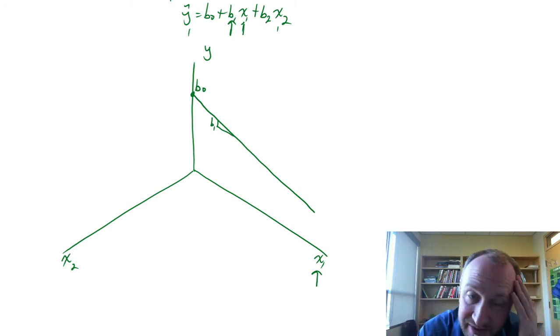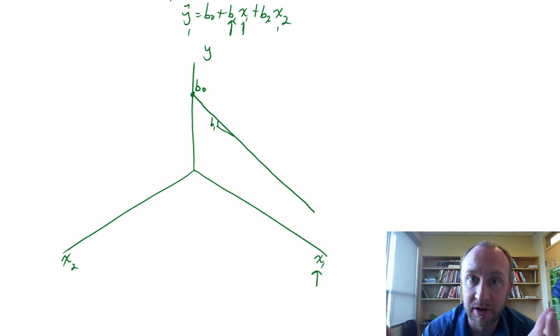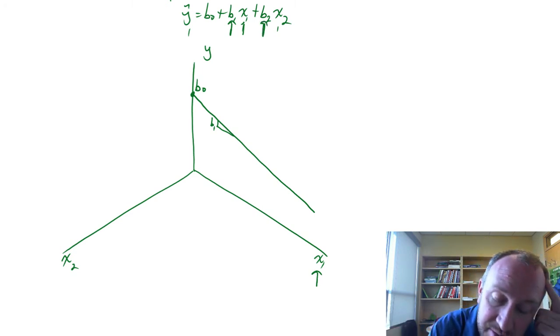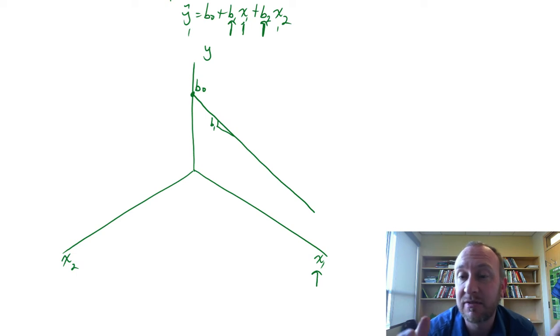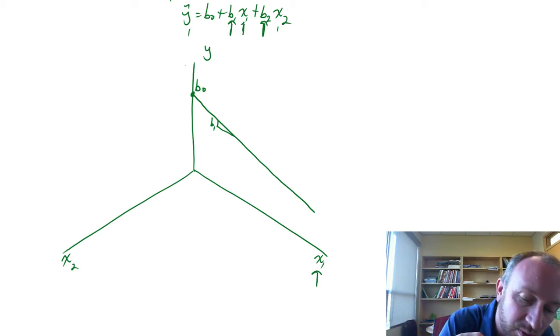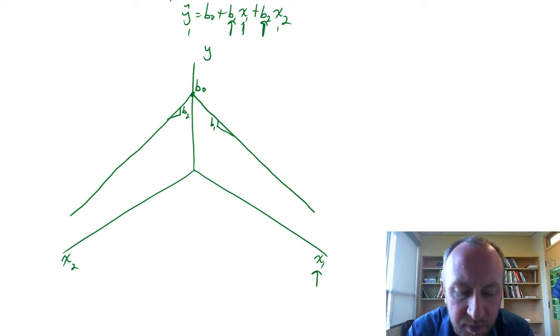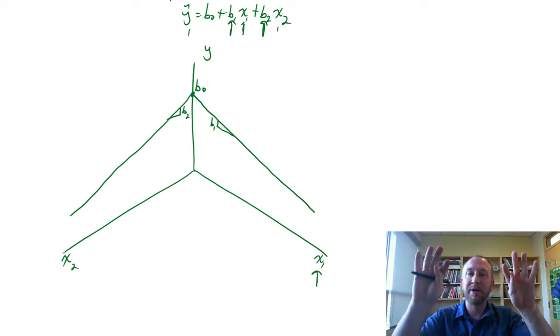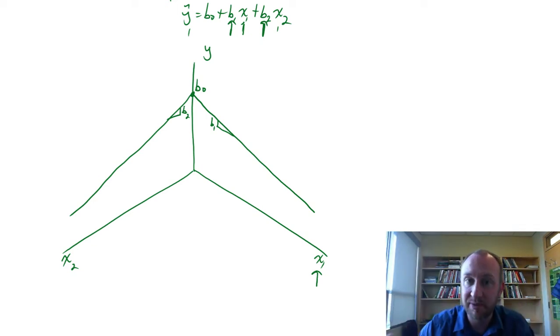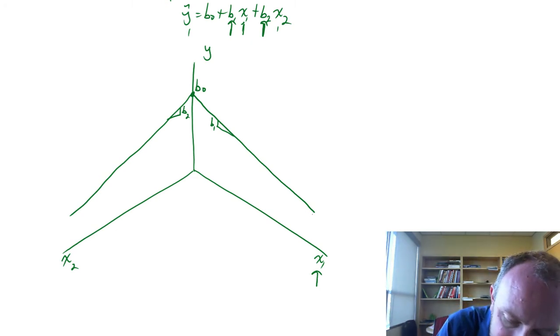Then we have a similar relationship, or a similar notation, when we look at x2. We have here this partial slope, that explains the relationship between x2 and our dependent variable y. And maybe that looks something like this. So this has partial slope b2. So we have now a partial slope against both of our independent variables.